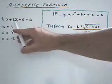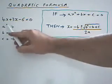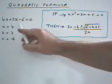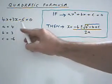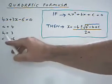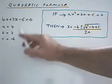Well this is a much more complicated example. I've separated out the coefficients a, b and c here. A equals 4, b equals 3, c is minus 6.